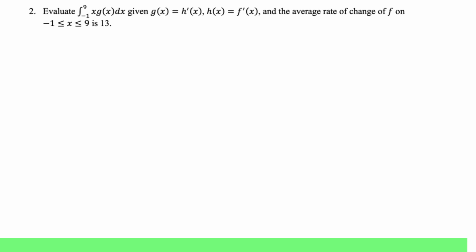Evaluate the integral from negative one to nine of x g of x dx, given g of x is h prime, h is f prime, and the average rate of change of f on negative one to nine is 13. So given a whole lot of information. First thing, g of x is h prime, so I'm going to rewrite our integral. Negative one to nine, x h prime of x dx. That's good, because this looks exactly like an integration by parts problem. So I'm going to say that u is x and dv is h prime of x dx, which makes du be dx and v be just h of x.